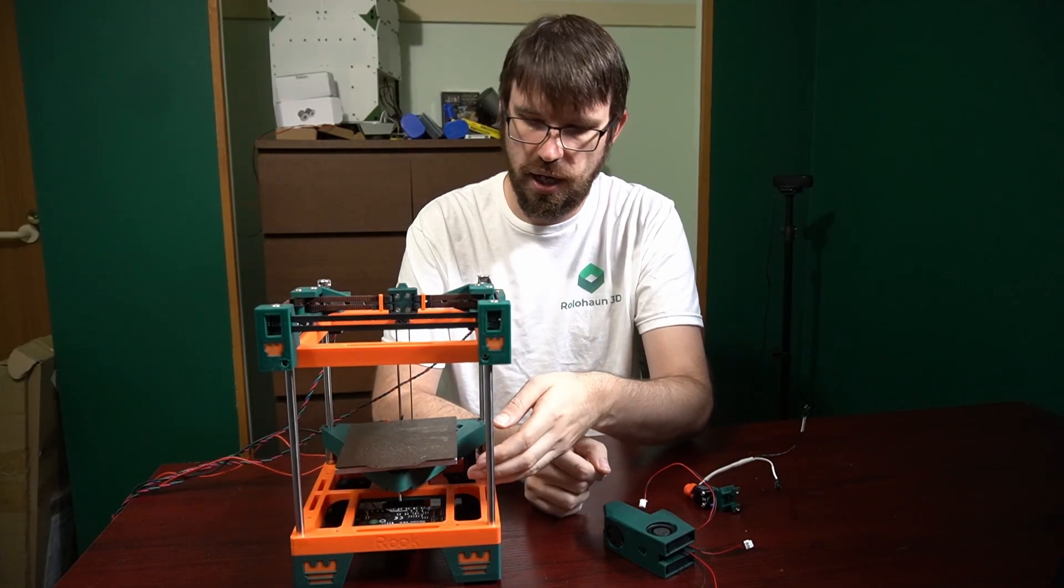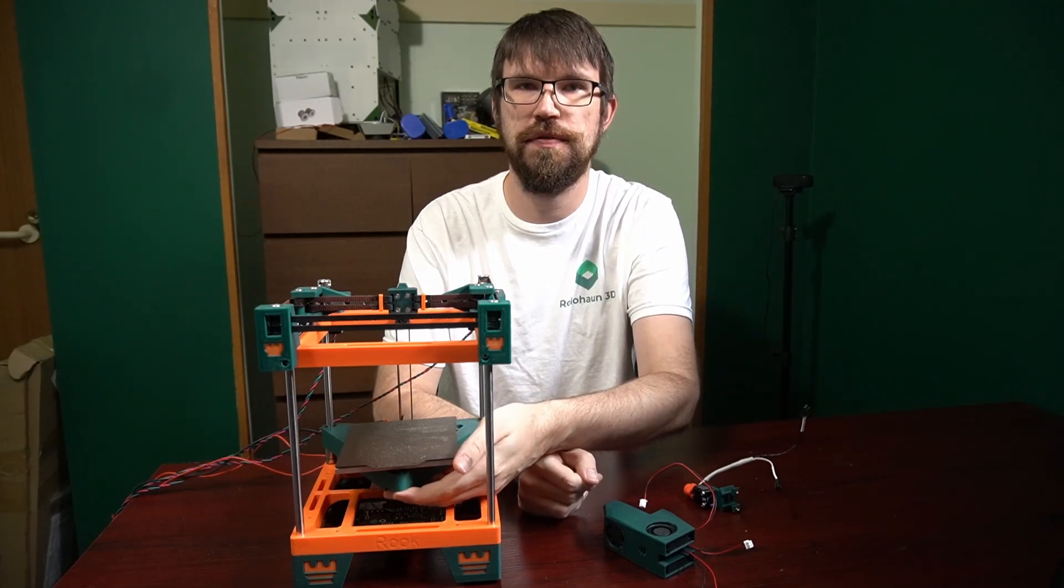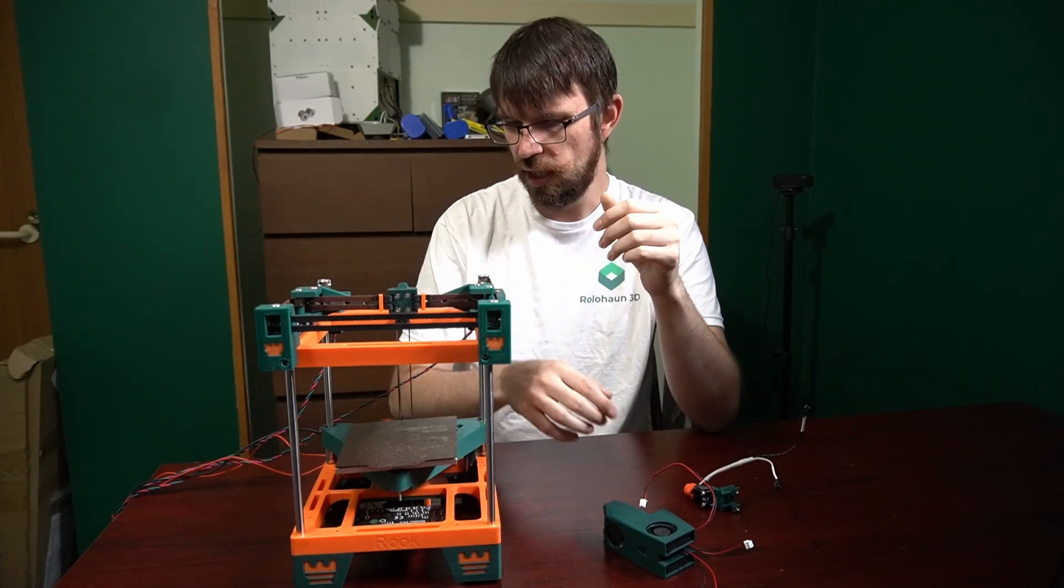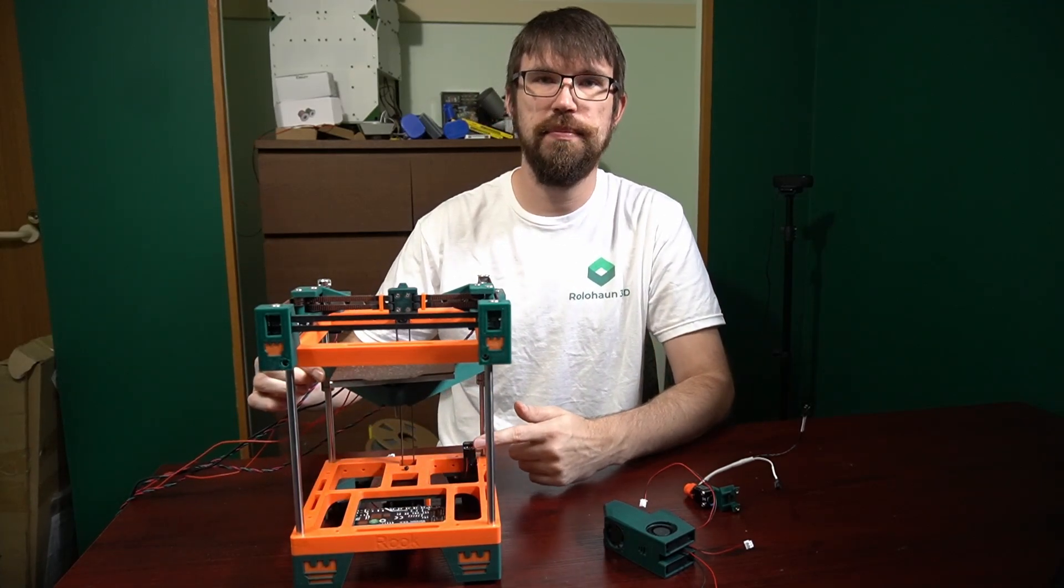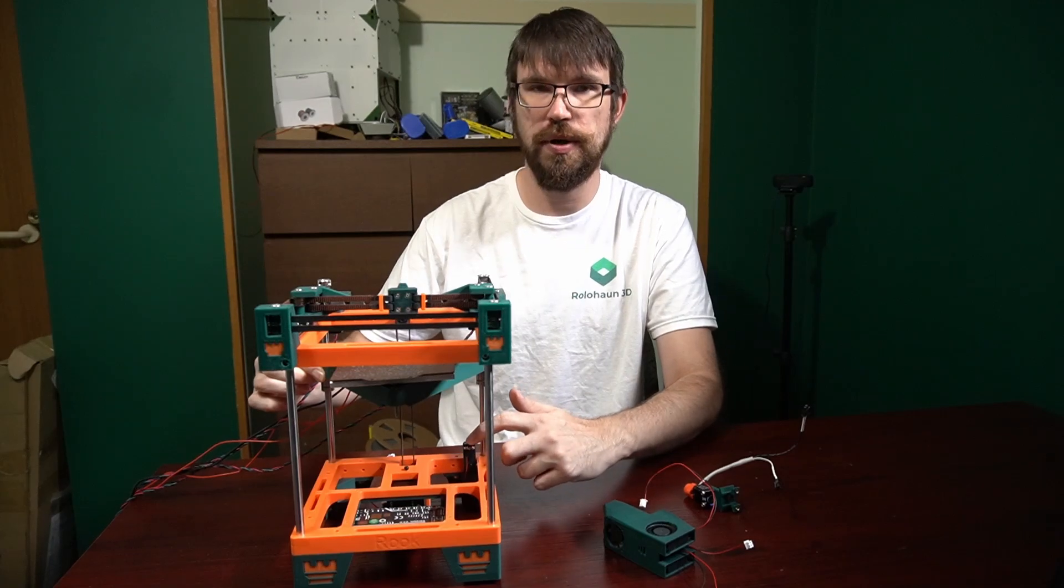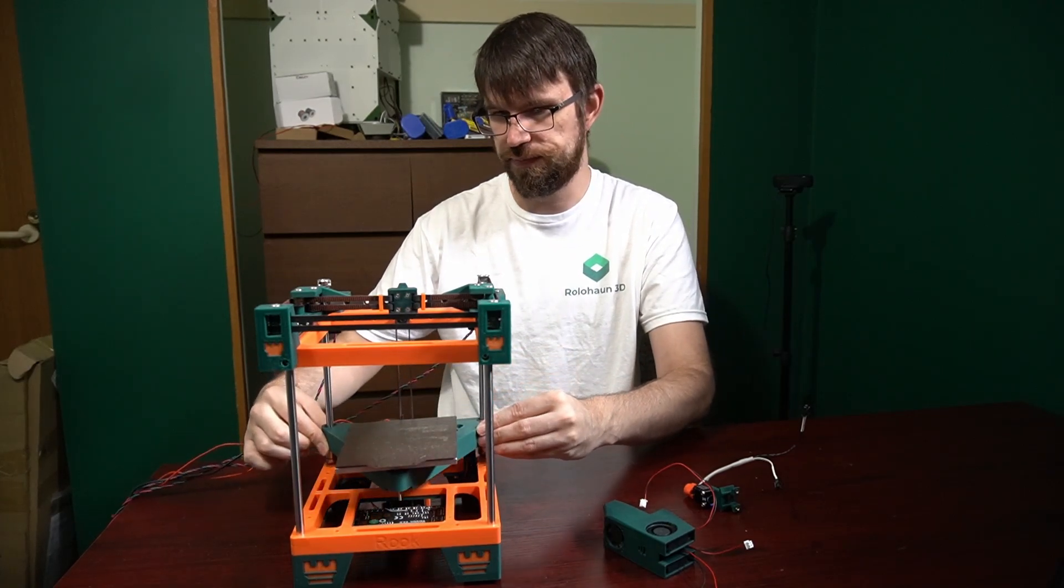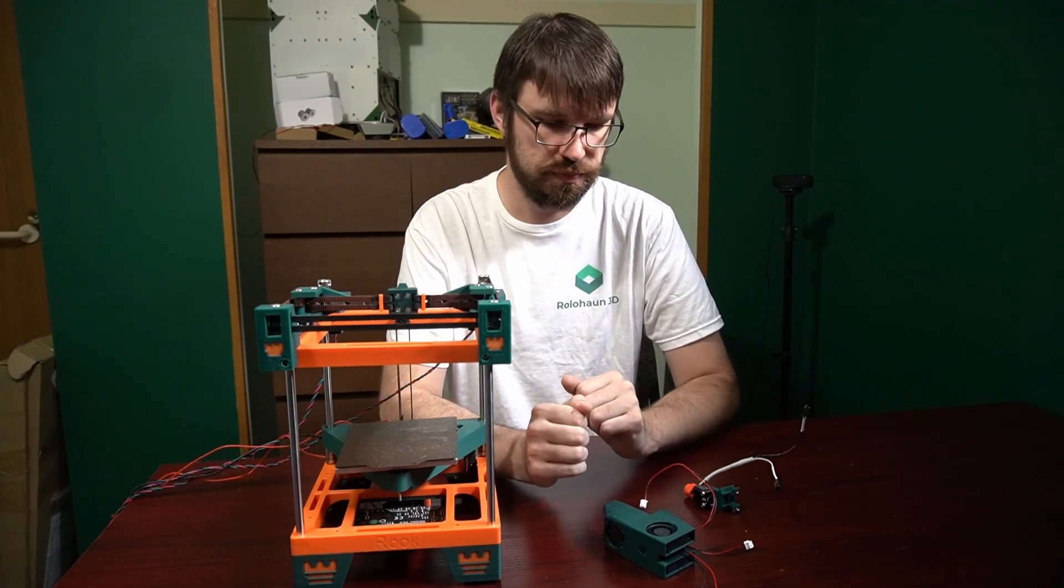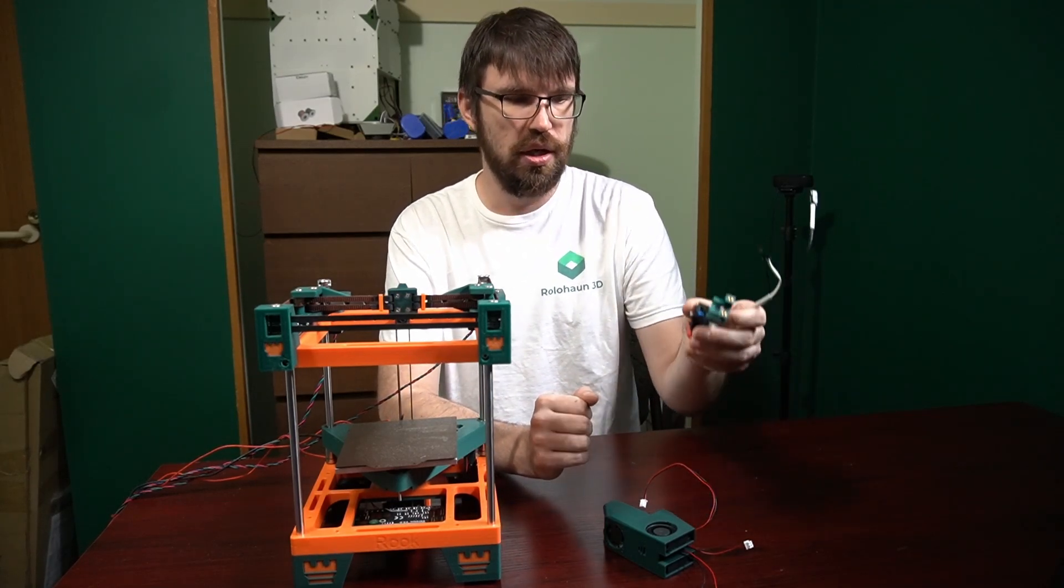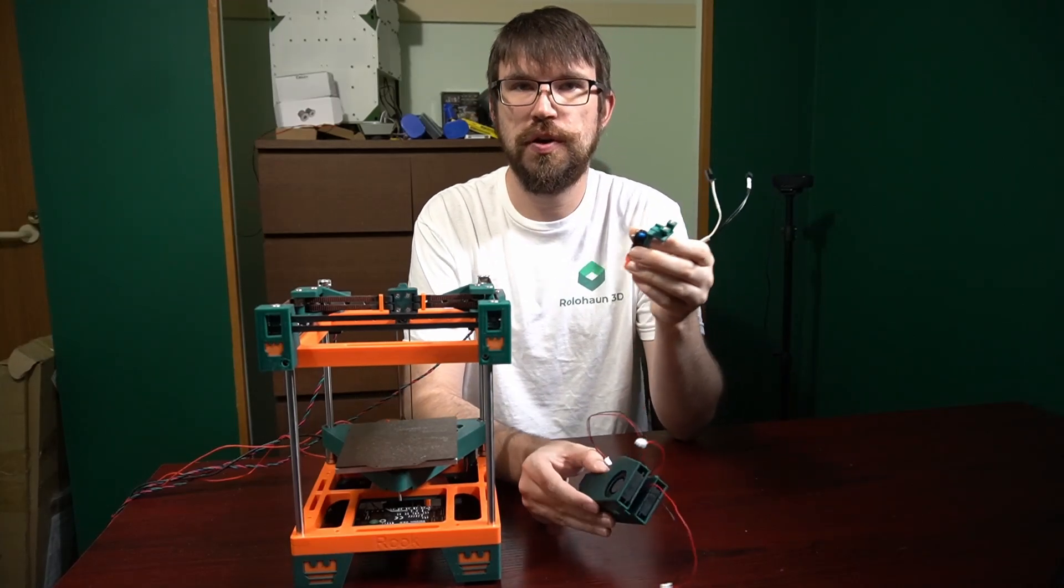I've added my thumb screws here for leveling. I have put my Z endstop here at the bottom - it just goes in the back corner here with our endstop. So that's kind of all I've done since the Part 3 video. So we're going to talk about the components of the Rookery and how to assemble them.